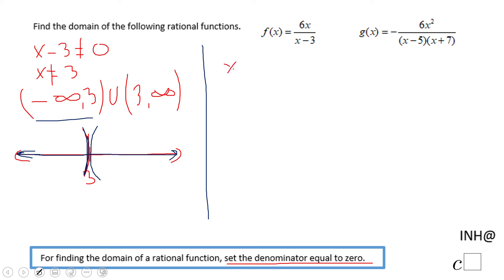So that means I'm going to take that x minus 5 and make it equal to zero, which is going to give me x equals 5. And then x plus 7 equals zero, that will give me x equals negative 7.